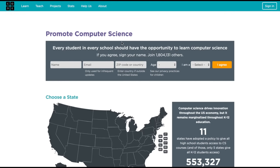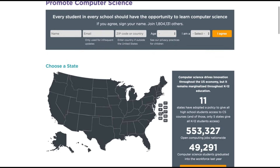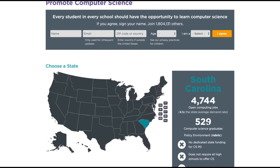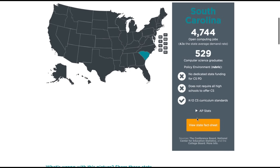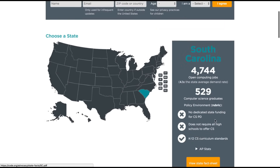Finally, the last subtab I'll go over is the Stats section. You can choose any state — since we're in South Carolina, let's take a look: 4,744 open computing jobs, which is four times the state average demand rate. This is a great example of what's relevant when thinking about college and career readiness. Coding opens up a lot of career options, and you can view a full state fact sheet that tells you more about what's coming in computer science and what opportunities coding can provide for students. And again, all of this is completely free.